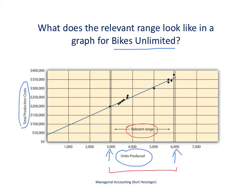If we get outside of this range, we need to make sure we don't need additional production capacity, that our fixed costs don't go up, and that we don't have to hire more employees and therefore incur higher costs. So we want to make sure we are within the relevant range when estimating costs. This graph gives you a graphical example of what the relevant range looks like.